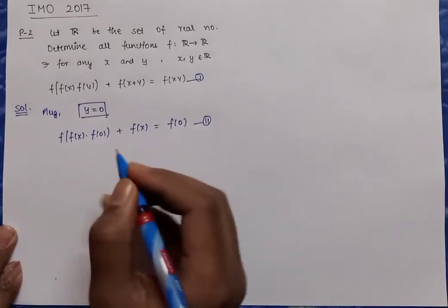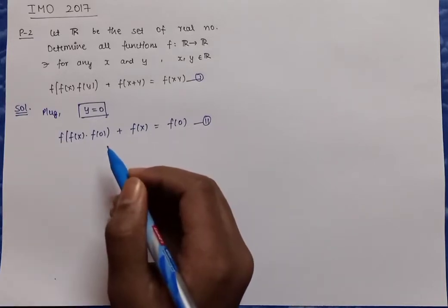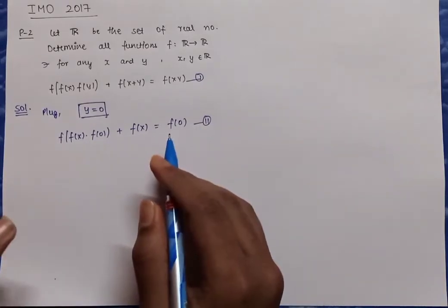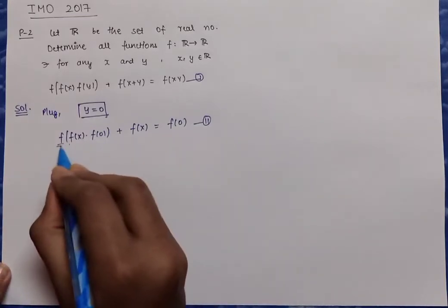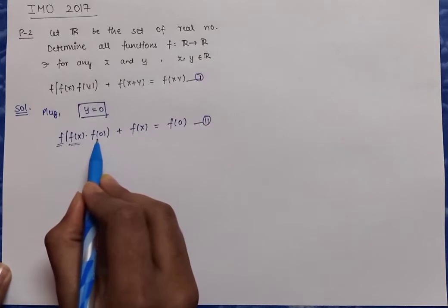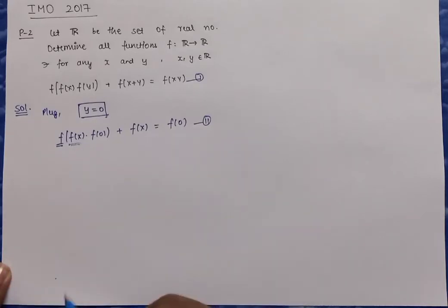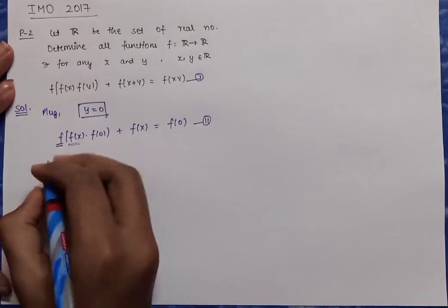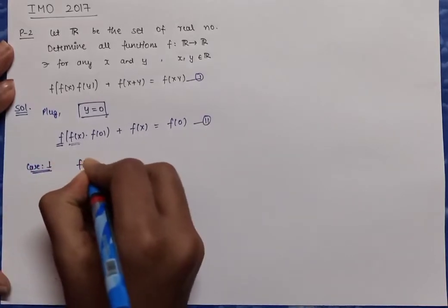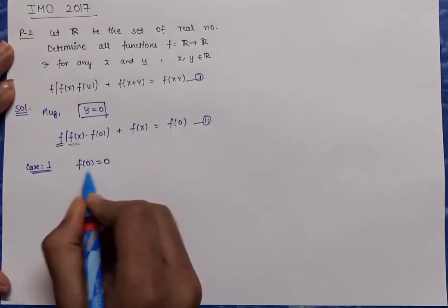If we observe carefully, f(0) can take any value — we don't know much about it. If f(0) is non-zero, then the input f(x)·f(0) inside the outer function will not be constant because it varies with f(x). But if f(0) = 0, the whole term inside the outer function becomes the constant 0. So we take two cases. Case 1: assume f(0) = 0.